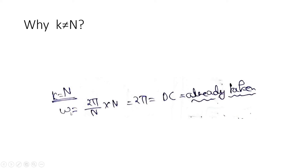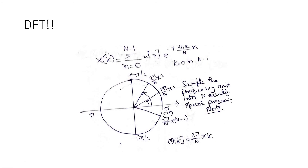Why not k equal to N? Because at k=N, omega equals 2π/N · N = 2π, which is DC — already taken. So our k range is 0 to N−1. This is a quick recap of the basic physical interpretation of DFT: we sample in the frequency domain at distinct points ω = 0, 2π/N, 2π·2/N, ..., up to 2π(N−1)/N. Some books also use angle notation for these points.